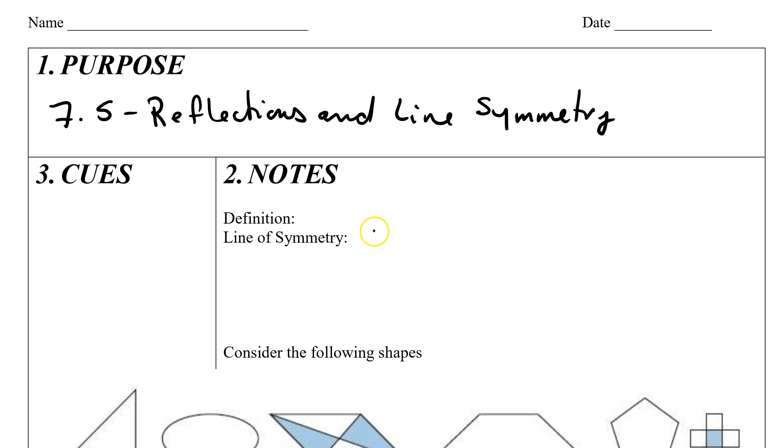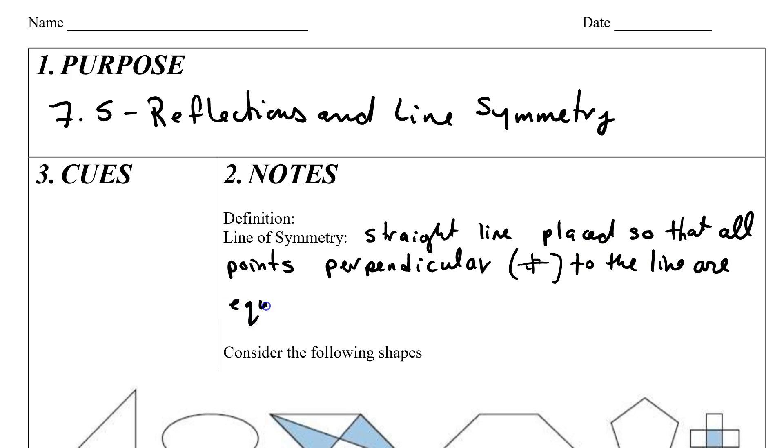So a line of symmetry is a straight line placed so that all points perpendicular, so at a 90 degree angle to the line, are equidistant. That's just fancy math language for equal distanced.